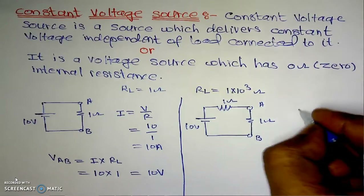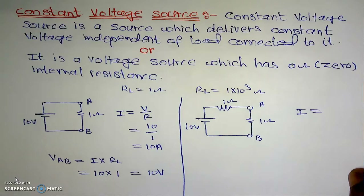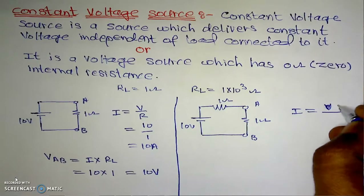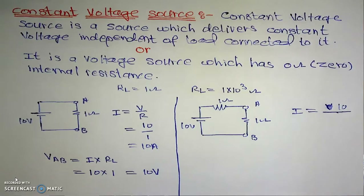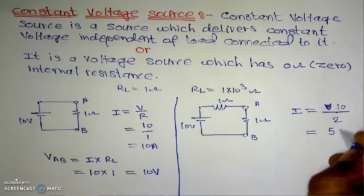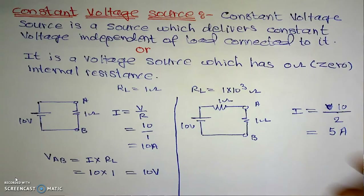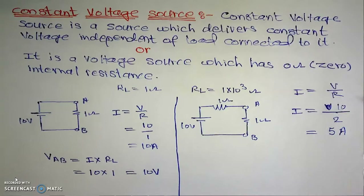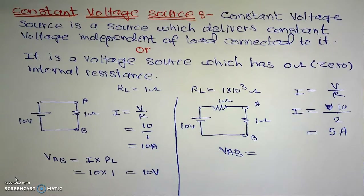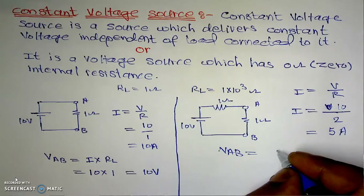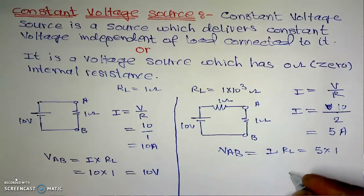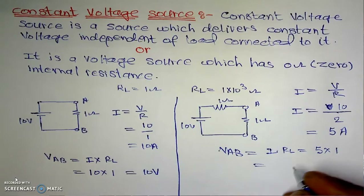In the second case (1-ohm internal resistance, 1-ohm load), the current I = 10 / (1+1) = 10/2 = 5 amperes. The terminal voltage VAB = I × RL = 5 × 1 = 5 volts.